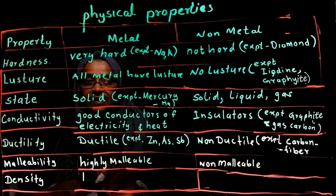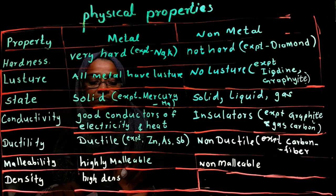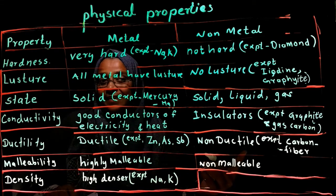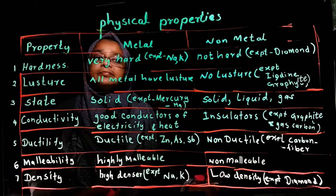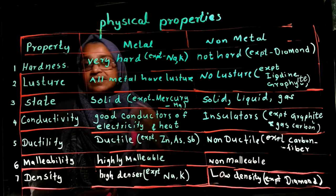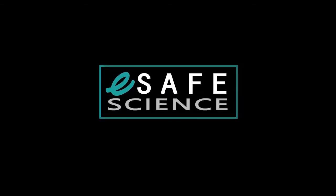Density: metals are high density except sodium and potassium; non-metals are low density except diamond, which is the substance with the highest density. The properties we have discussed can be summarized through this table. Thank you, and we'll be back next day.